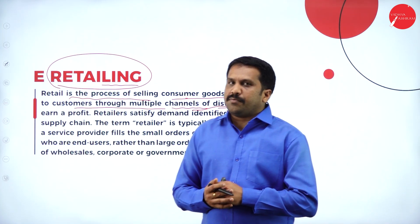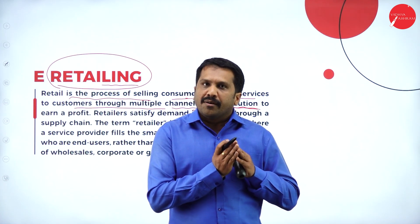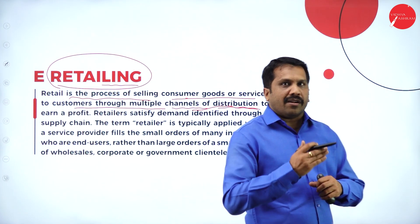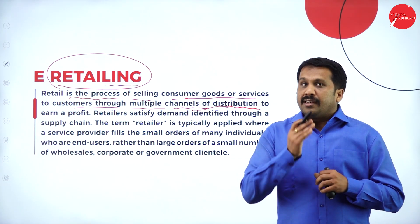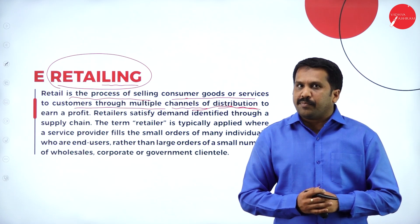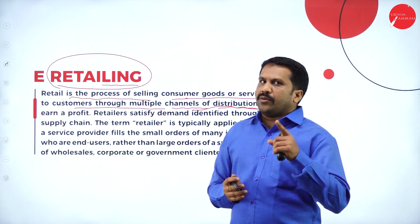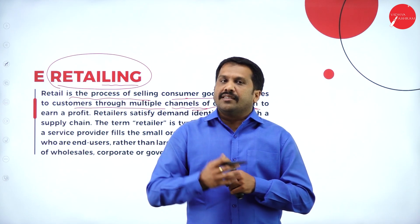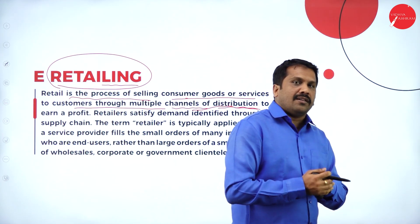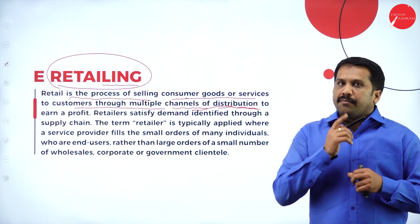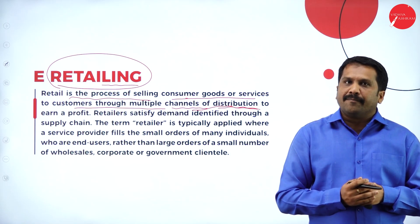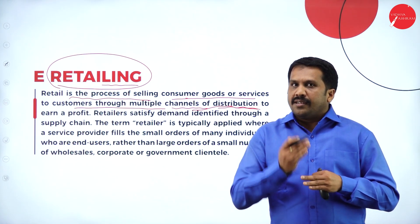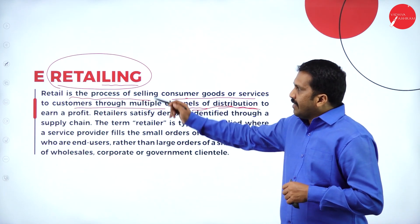A best example is OnePlus. This brand was introduced many years ago but was available only online. When it was available only online, middle-aged people around 35 to 40 and older groups were not showing interest. The reason was simple — it was not available in shops. Youngsters were attracted by the camera, storage, and price. But the middle age group did not trust online; they always went with offline. Once OnePlus started being introduced in shops, people started buying more. That is called e-retailing.